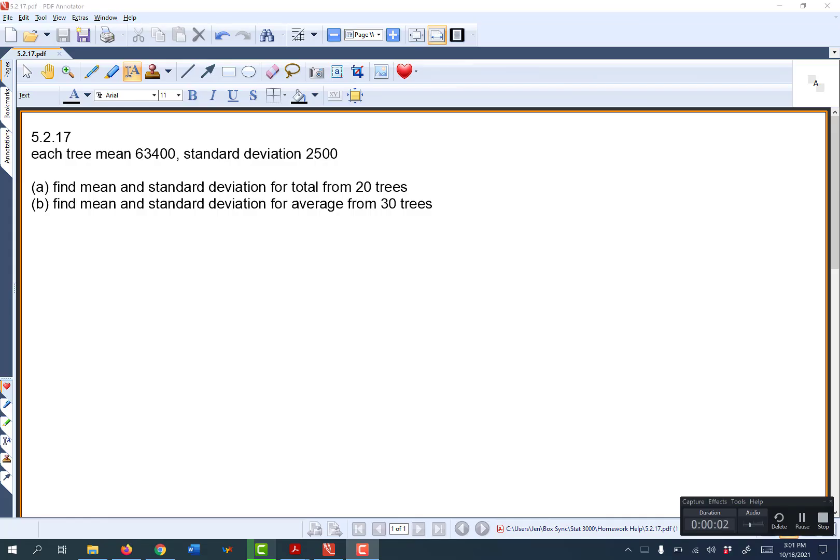This is 5.2.17. So we're told that we're looking at the amount of lumber we can get from each tree, or from trees. And so for each tree we know that the average amount of lumber you can get is 63,400 and the standard deviation of how much lumber you can get is 2,500. So that would be the mean and standard deviation for one tree.